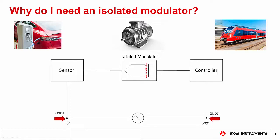The second reason for using an isolated modulator is protection against high voltage. When industrial equipment is running at hundreds of volts, isolated modulators can safely withstand high voltage surges that can damage equipment or harm humans.